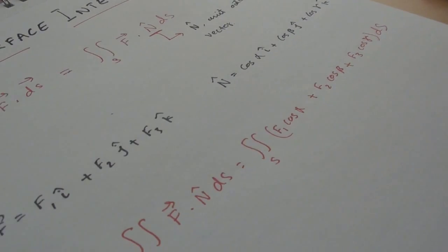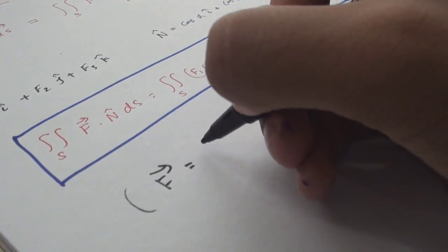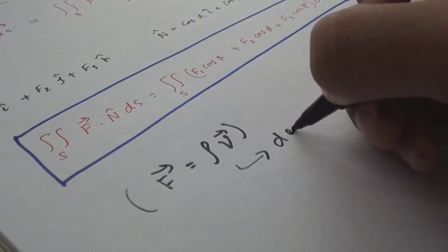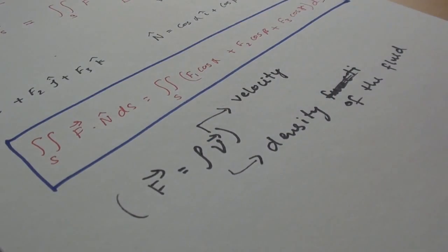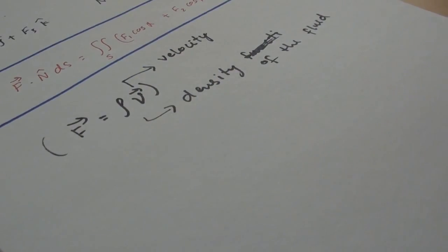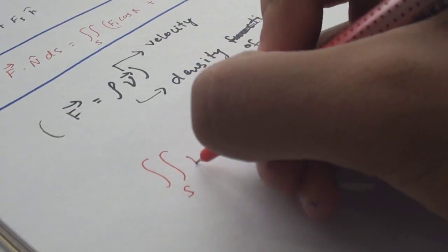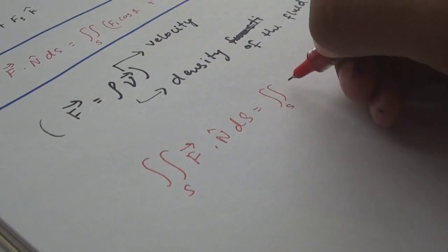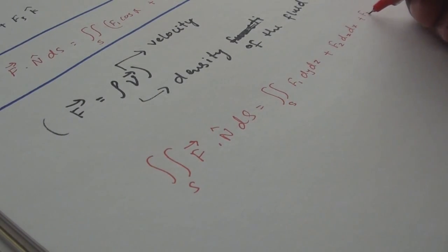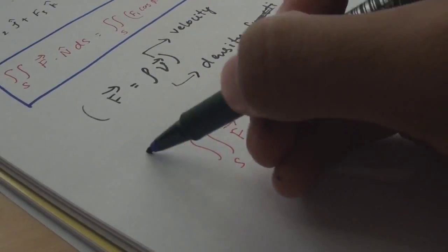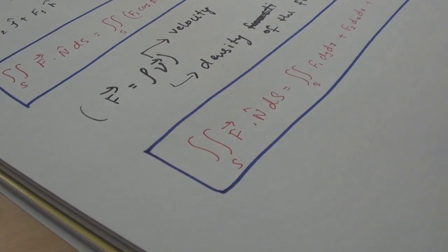The surface integrals arise naturally in flow problems. If f equals ρv where ρ is the density of the fluid and v is the flux across the surfaces, you can also use f for gravitational forces, electric force, magnetic force, and other stuff. We can evaluate it by the double integral of f·n ds which equals to the double integration of f1 dy dz plus f2 dz dx plus f3 dx dy.